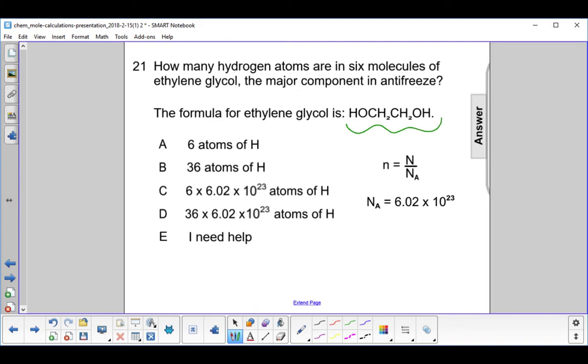The first thing we have to do is figure out how many atoms of hydrogen are in one molecule. Well, we just have to count them. So there's one, two, three, four, five, six. So we have six atoms of hydrogen in one molecule of ethylene glycol.